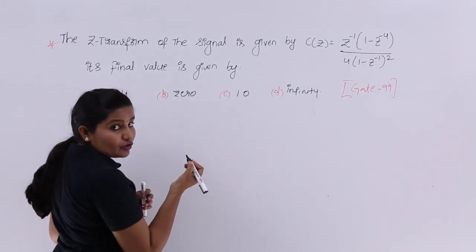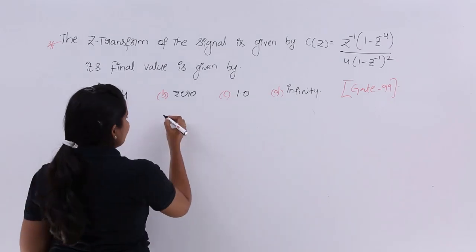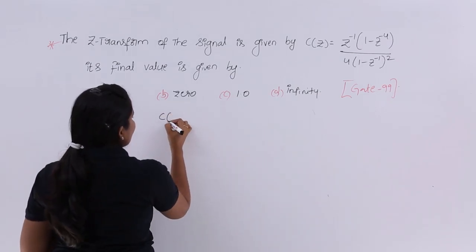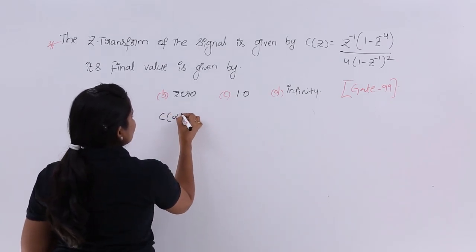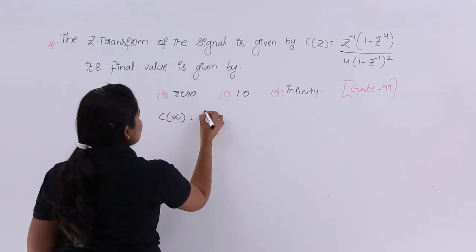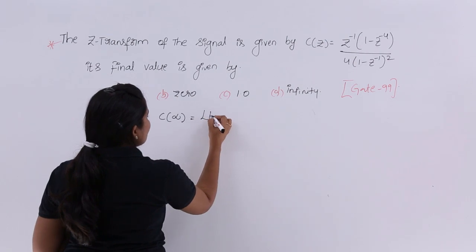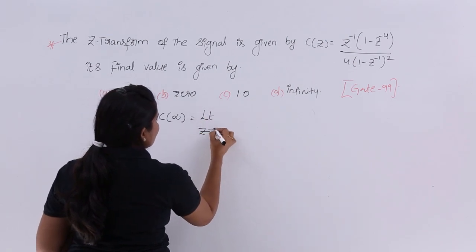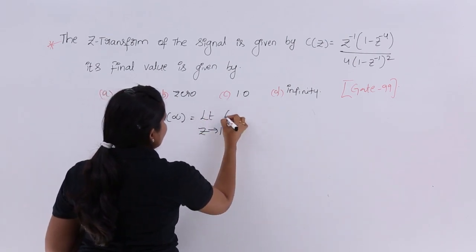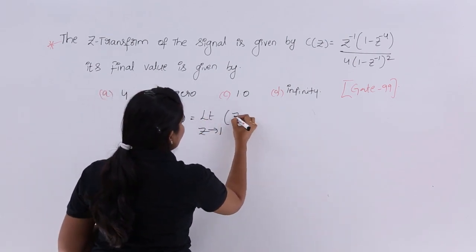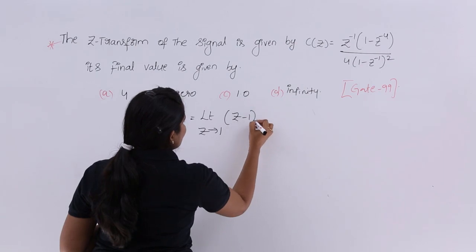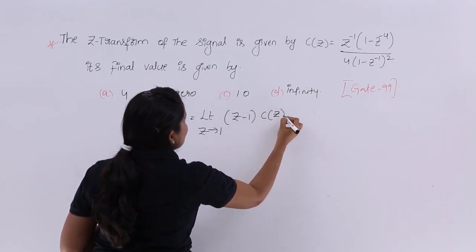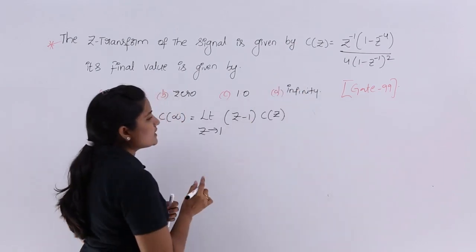First, I want to write the final value theorem. The final value, C(∞), is equivalent to the limit as Z tends to 1 of (Z - 1) into C(Z). This is the final value theorem for the Z-transform.